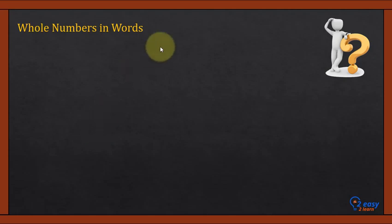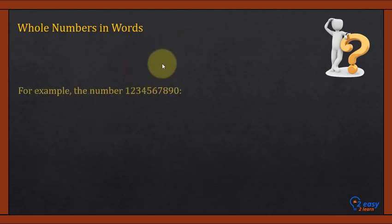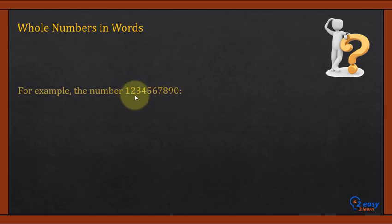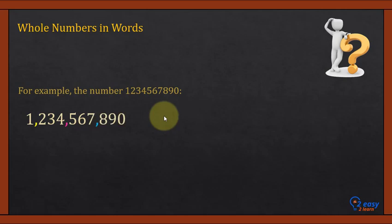How to write a whole number in words? For example, we have a very big number: 1,234,567,890.